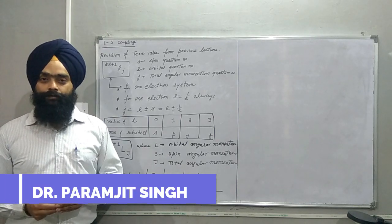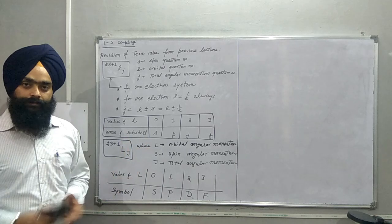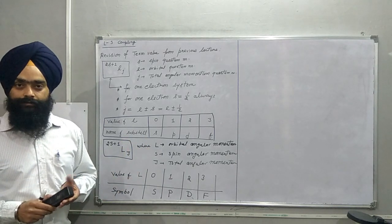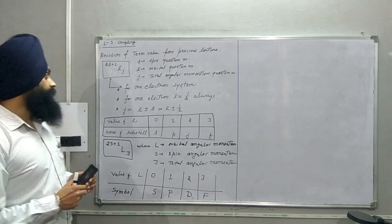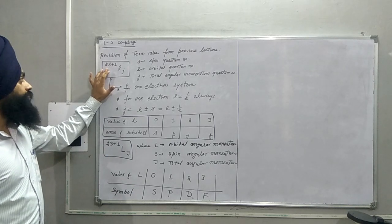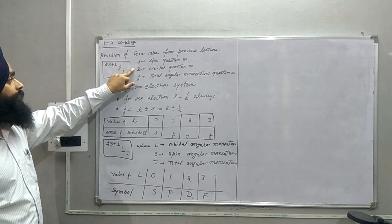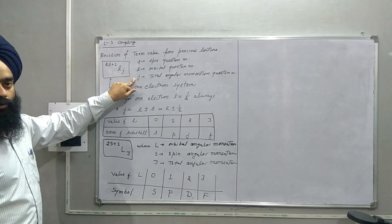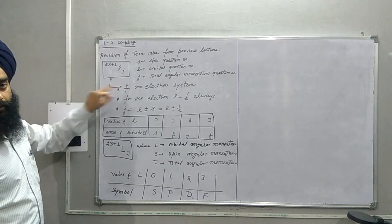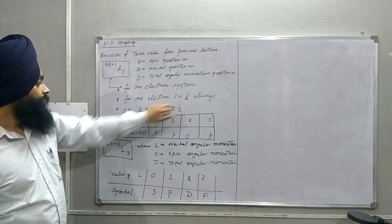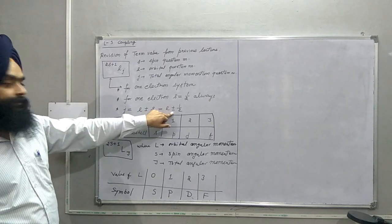Hello students, in today's lecture we are going to discuss LS coupling. This is connected to the previous lecture where we discussed the fine structure of the hydrogen atom and learned about the term value. The formula for the term value is 2S+1 L_J, where S is the spin quantum number, L is the orbital quantum number, and J is the total angular momentum quantum number. This formula is valid only for a one-electron system, where S equals half and J equals L plus or minus half.